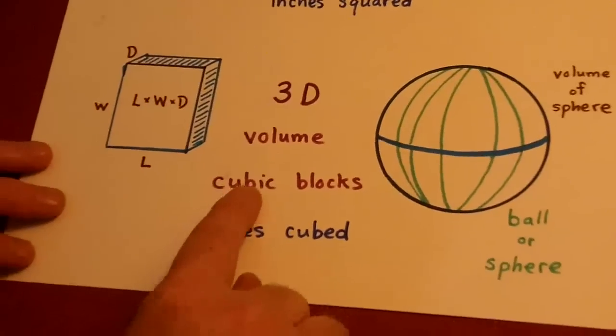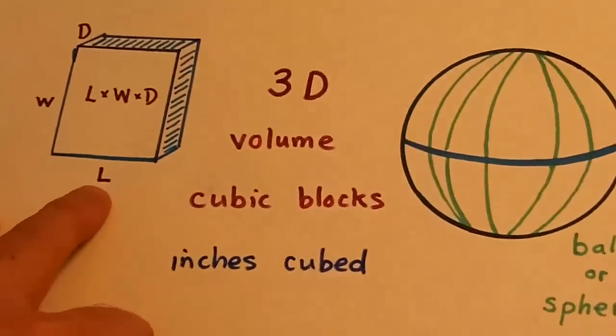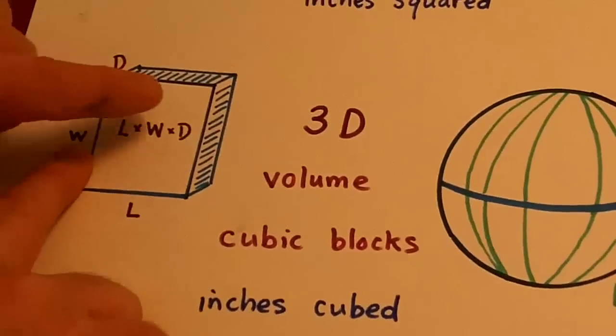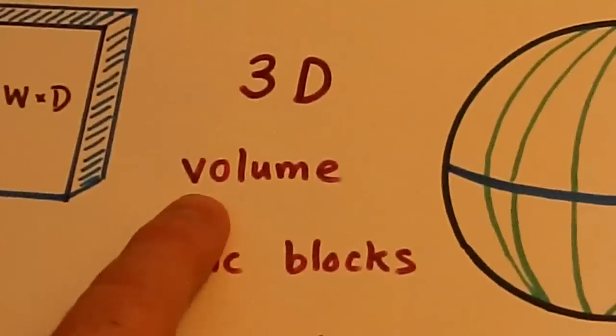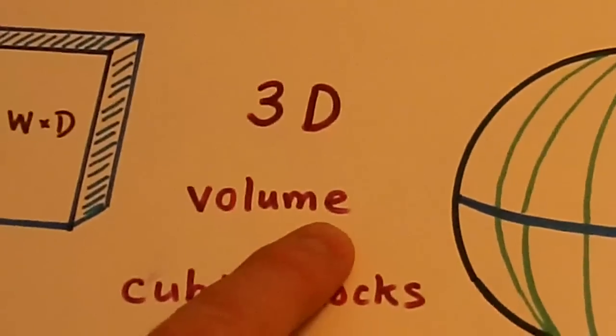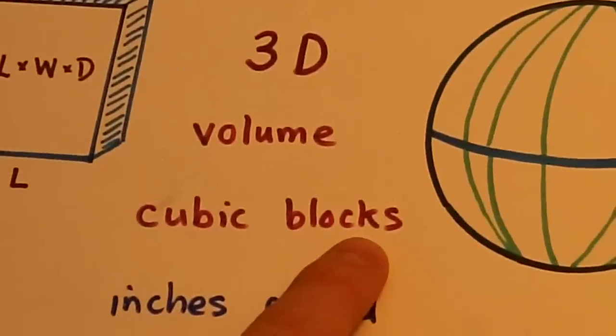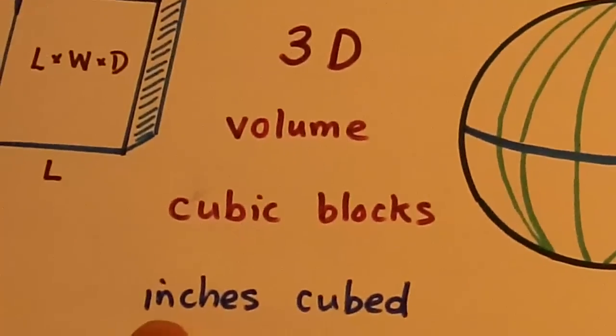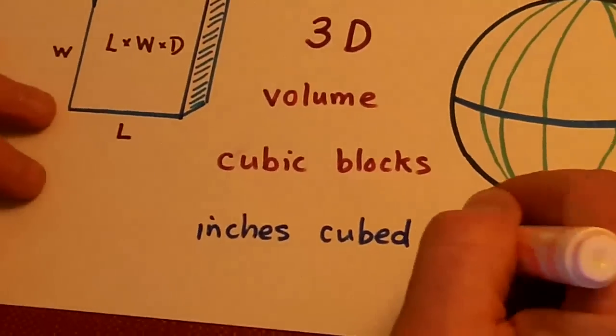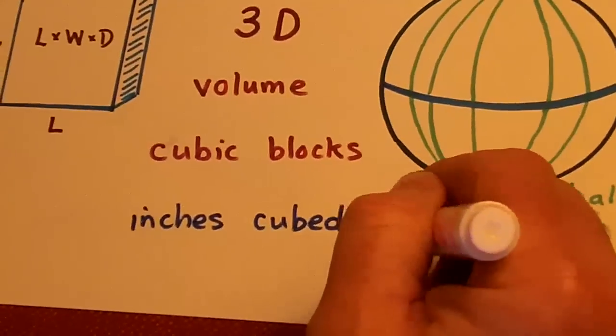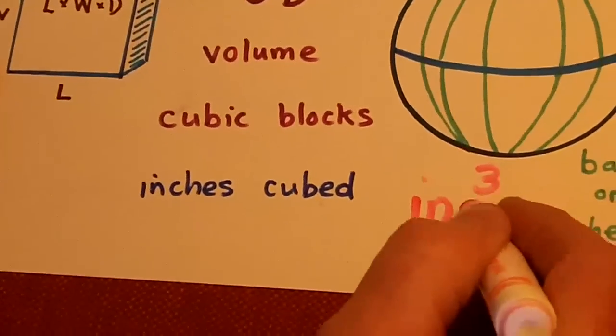And so 3D is three dimensions: length, width, and depth. And that measurement is called the volume of a particular shape. Those are measured in cubic blocks, and it looks like inches cubed. Cubed is three, because we're looking at three dimensions.